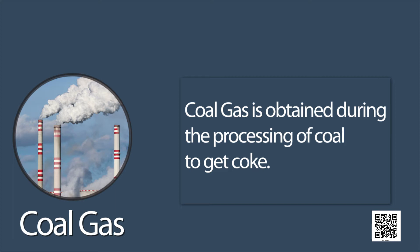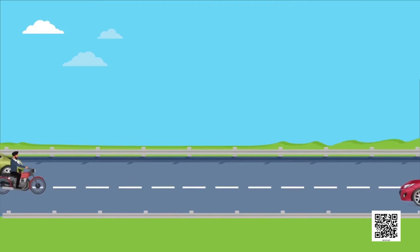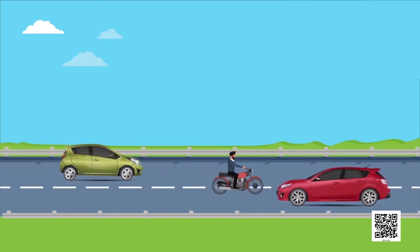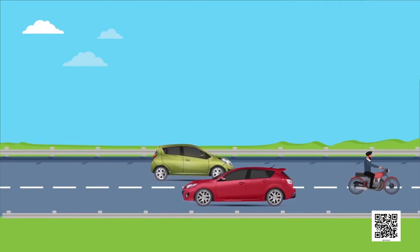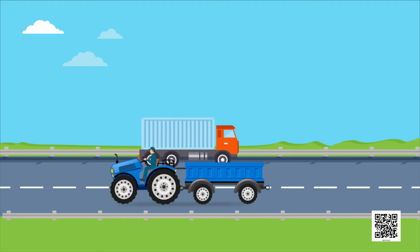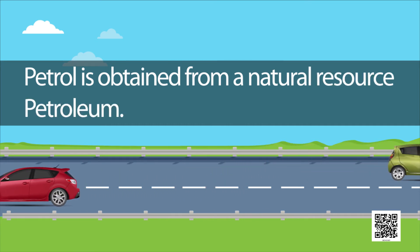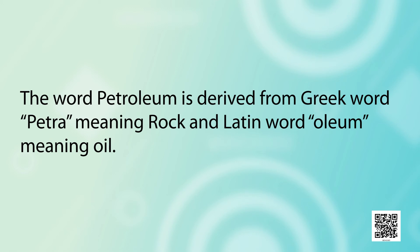After learning about how coal is formed, let us now study how petroleum is obtained. Petrol is used as a fuel in light automobiles such as motorcycles, scooters and cars. Heavy motor vehicles like trucks and tractors run on diesel. Petrol and diesel are obtained from a natural source called petroleum. The word petroleum is derived from the Greek word 'petra' meaning rock and the Latin word 'oleum' meaning oil, as it is extracted from underground reservoirs found beneath the land or the ocean.